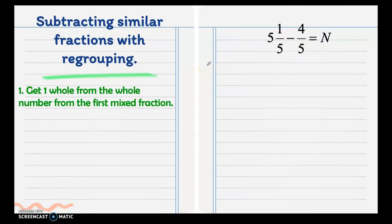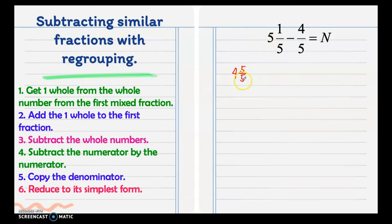Get one whole from the whole number from the first mixed fraction. We get 1 from the 5, so the 5 will become 4. Where are we going to put the 1? We make it to 1 whole fraction and write it as 5 over 5. 4 and 5/5 is equal to 5. Where did I get this 5 over 5?